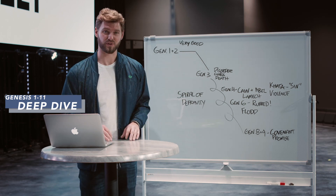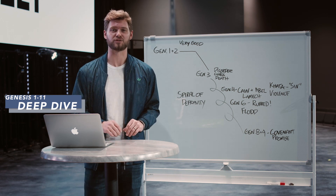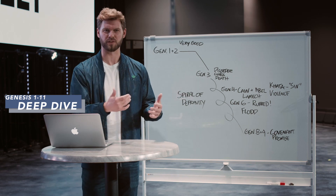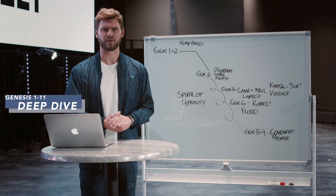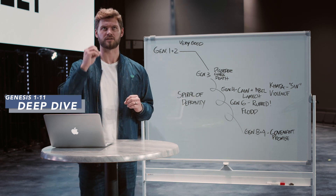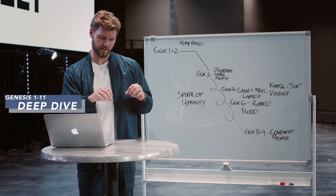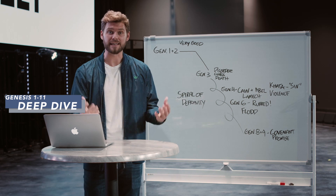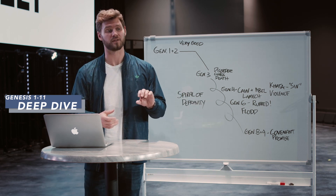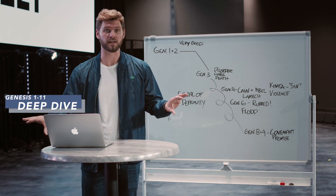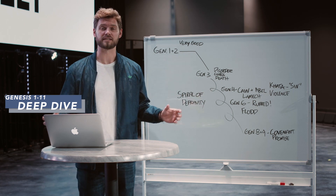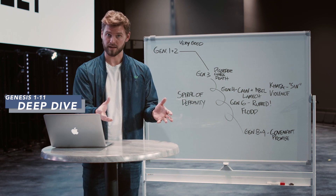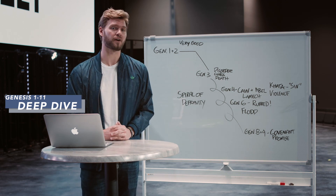When you look at the creation story, what God is actually doing is addressing the tohu — bringing order by separating the light from the dark, the sky from the waters below so there's a place for humans to live, and separating the land from the waters. He calls all of these things good because he's bringing order to the disorder, and by ordering it, life is now something that's able to flourish.